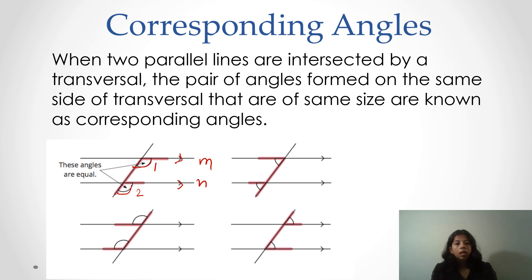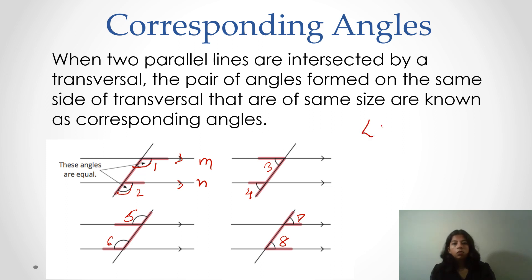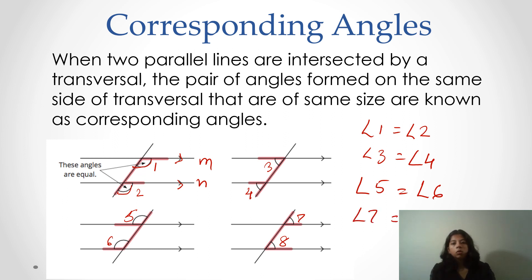Similarly, let's mark angles 3 and 4 — they are on the same side and the direction of the parallel lines is also the same. Suppose angles 5 and 6 here, and 7 and 8. So all these pairs are equal to each other: angle 1 equals angle 2, angle 3 equals angle 4, angle 5 equals angle 6, and angle 7 equals angle 8.